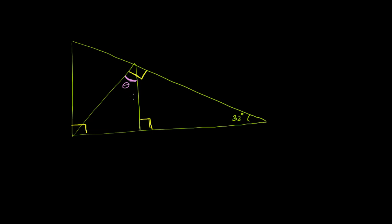Maybe we can solve this in multiple different ways — that's what's really fun about these problems. So if this angle is theta, theta is adjacent to this green angle. If you add them together, you're going to get this right angle. So this pink angle theta plus this green angle must be equal to 90 degrees. When you combine them you get a right angle, so the green angle's measure is going to be 90 minus theta.